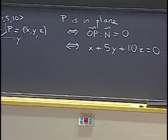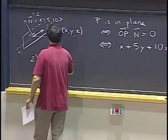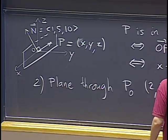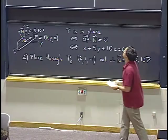Now let's think about a slightly different problem. Let's find the equation of a plane through a point P₀ with coordinates (2, 1, -1), and with normal vector again (1, 5, 10). How do we find an equation of this thing?